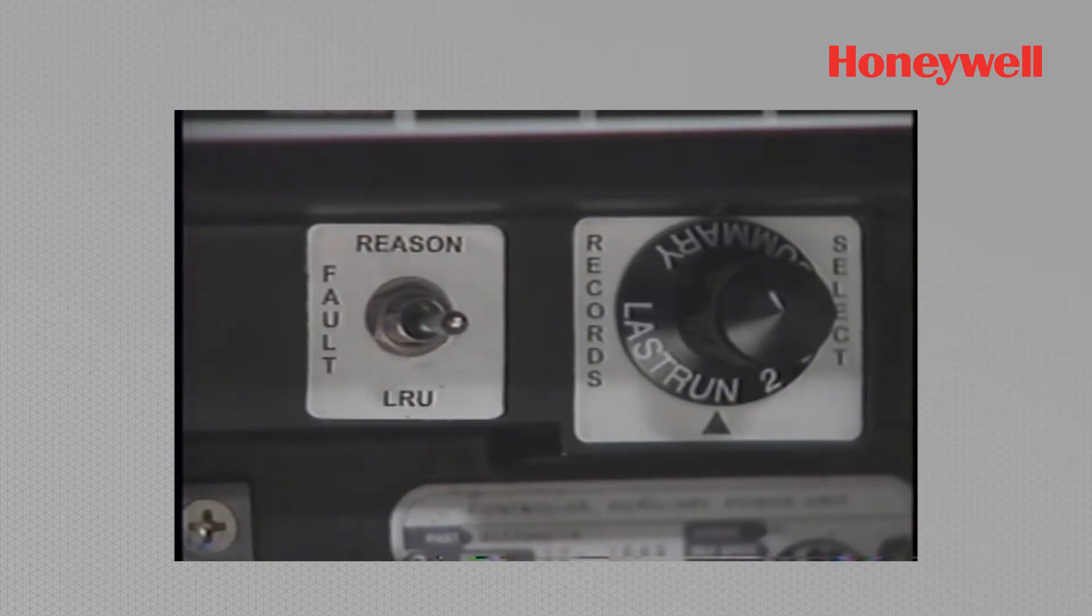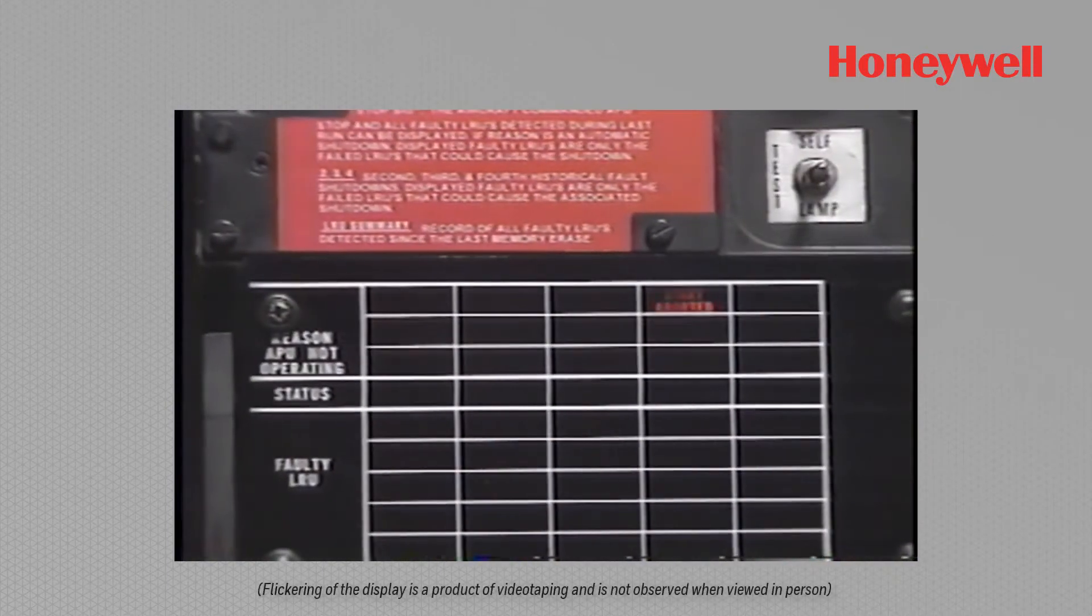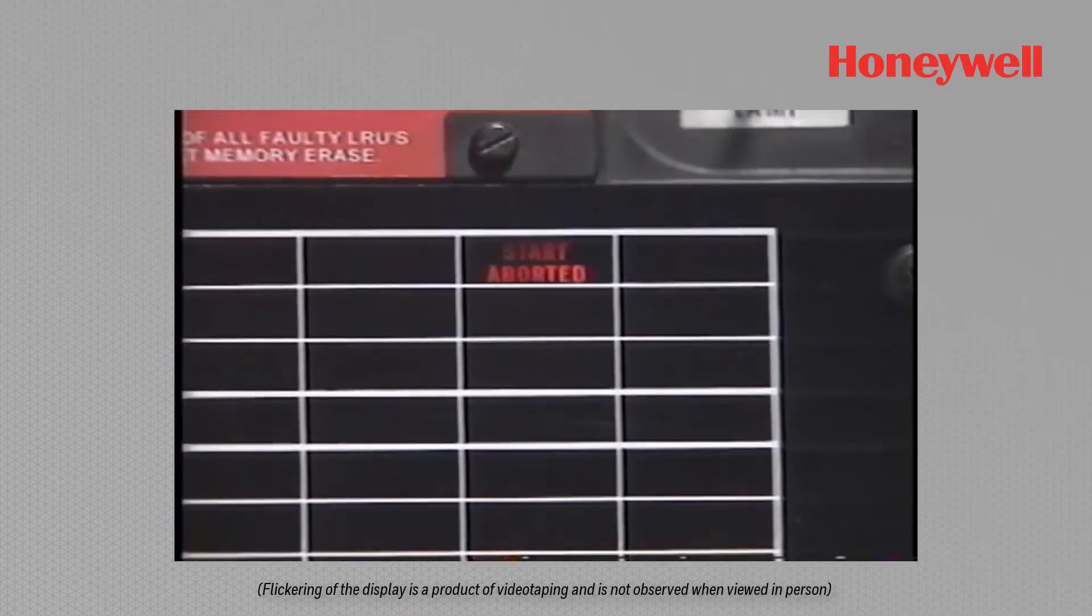Rotating the record select switch to last run and positioning the fault toggle switch to reason will display the shutdown reason for the last APU run for 6 seconds.